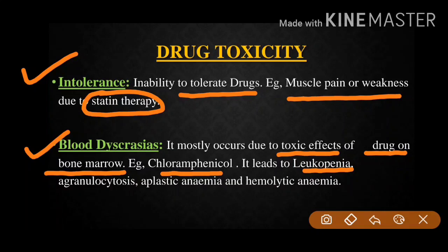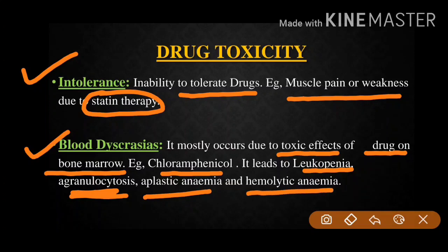Agranulocytosis is a decrease in WBCs — specifically a decrease in neutrophils. In aplastic anemia, the body fails to produce blood cells. In hemolytic anemia, RBCs are destroyed faster than they are produced — the destruction rate of RBCs is increased and the production rate is decreased. These are the types of blood dyscrasias.